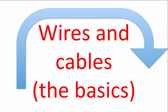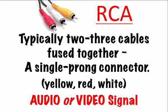Wires and cables: the basics. RCA are typically two to three cables fused together. It is a single-prong connector type. RCAs come color-coded yellow, red, and white. They provide an audio or video signal, depending on how you connect it to and from individual components.